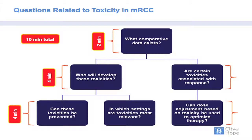I'm going to very briefly go over what comparative data exists to date, and what I'll suggest is that we really don't have enough comparative data to address therapeutic selection. I'll then move on to discuss who will develop toxicity, whether or not these toxicities can be prevented, and whether there are certain settings in which toxicity considerations might be more relevant.